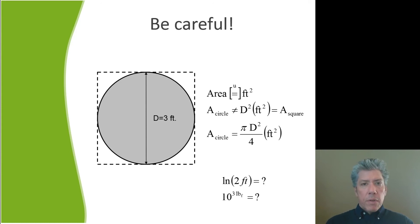Now, another thing to be careful of, if you have a problem where you're trying to take the natural logarithm of a number, if that number has units, you're probably doing something wrong. Or if you try to take a number like 10 to the third power, and it's 3 pounds force as the power, again, you're doing something wrong. Exponents and arguments of logarithmic functions should not have units in them. So this doesn't make any sense.